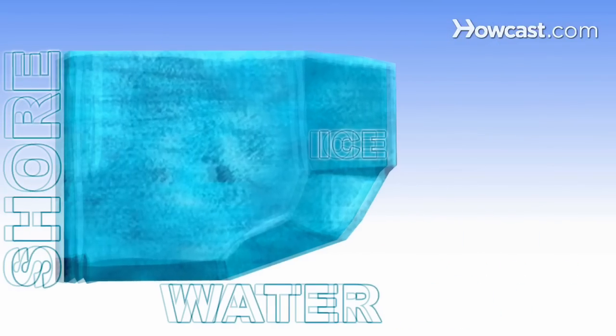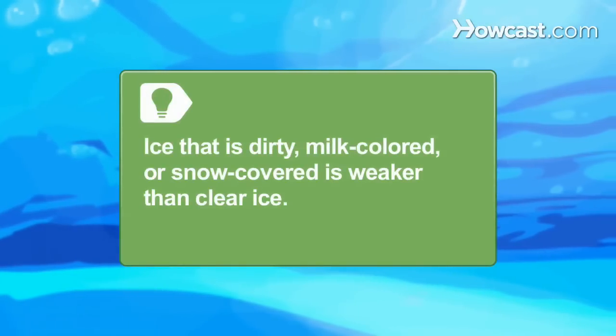Ice is generally thickest near the shore. Ice that is dirty, milk-colored, or snow-covered is weaker than clear ice.